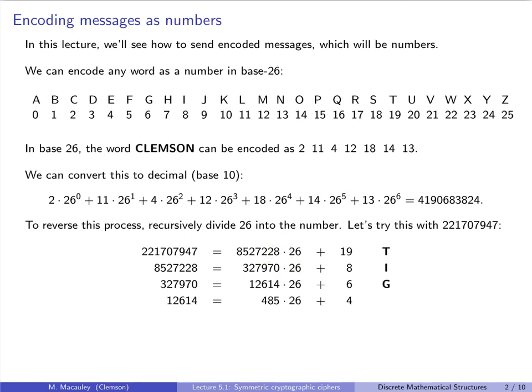Next, we take 26, and we divide it into our previous quotient 12614. And we get 485 times 26, plus a remainder of 4. So 4 is E. And then we keep going. We're almost done now. We take 26, we divide it into 485, our previous quotient. We get 18. So 485 is 18 times 26, with a remainder of 17. And 17 is an R.